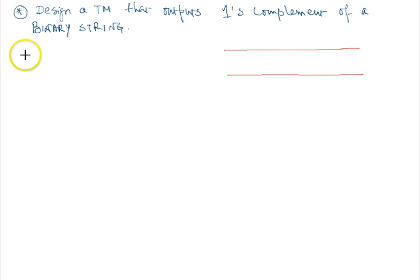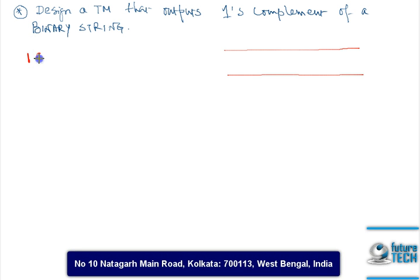Let us consider that the binary string is 101101. On given this input, it's going to produce its 1's complement, that means 010010. So this is going to be the output.